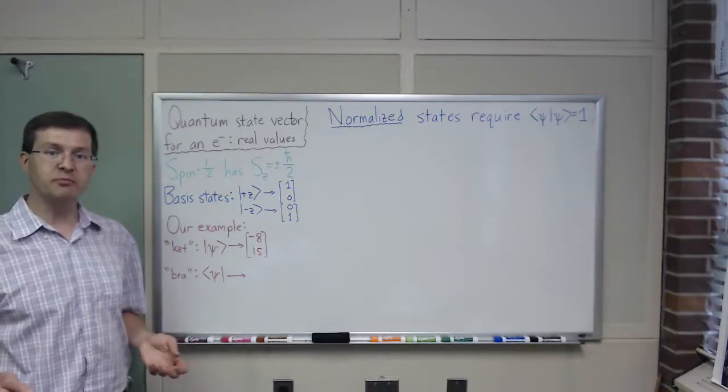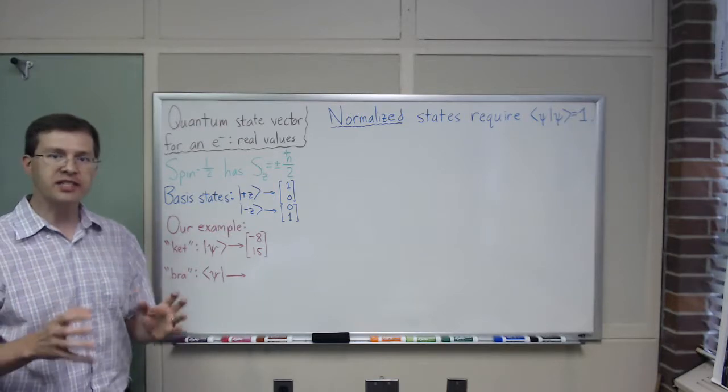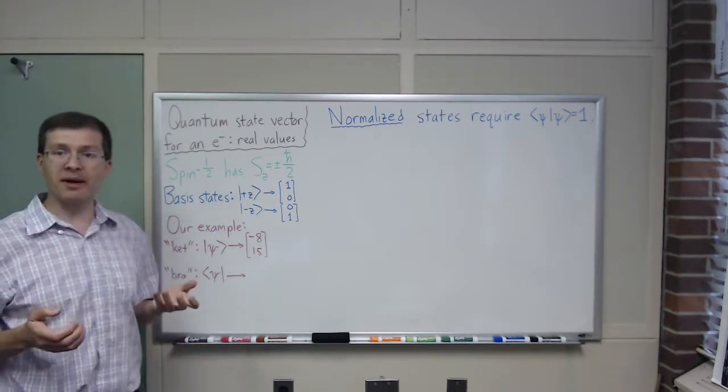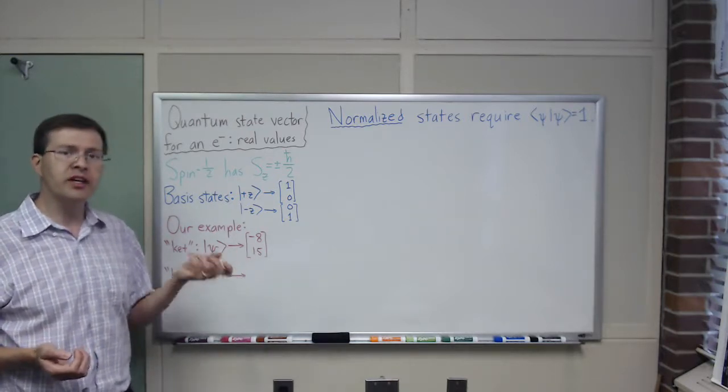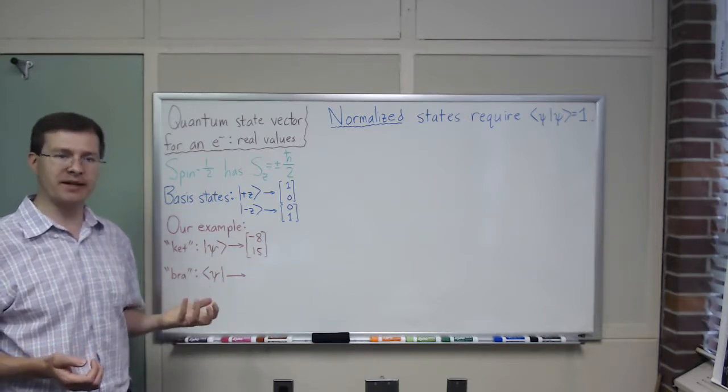This is an introduction to mathematics we use to study quantum systems. For this first example, we're going to look at the simplest quantum system I can think of, which is an electron by itself, not moving, just looking at that electron's spin, its intrinsic angular momentum.